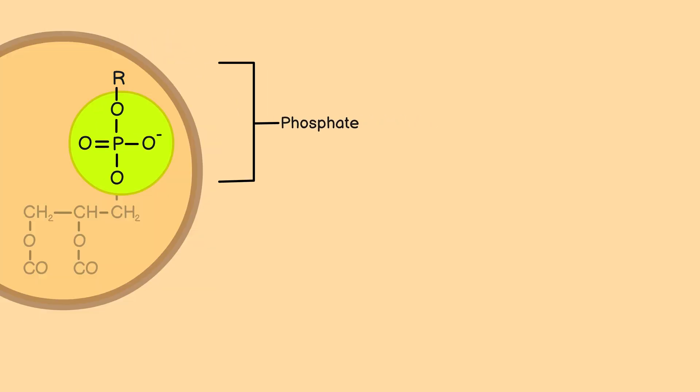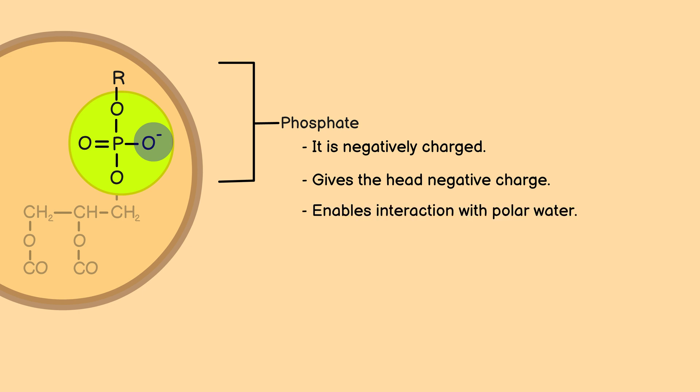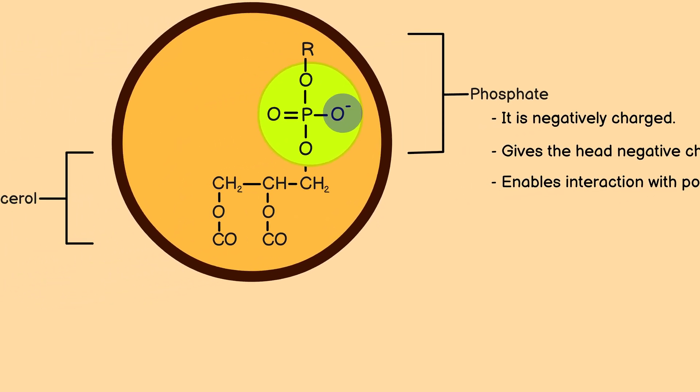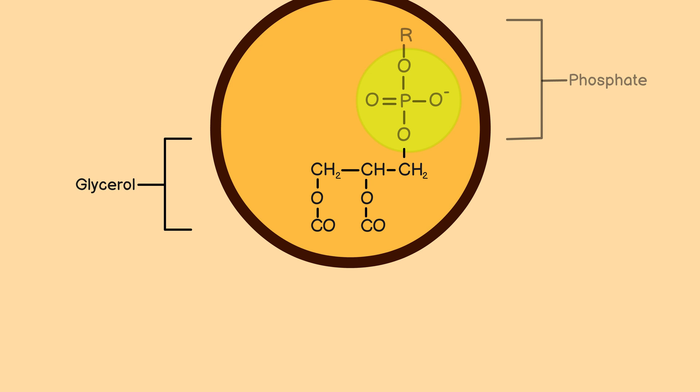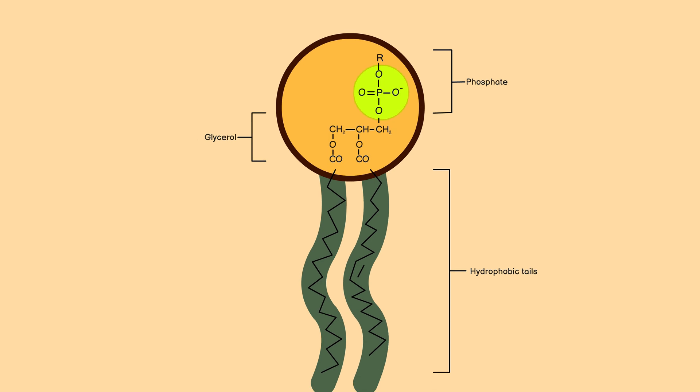The hydrophilic head is made up of a phosphate group and glycerol. The phosphate group is negatively charged, and it gives the hydrophilic head its overall negative charge. This negative charge allows it to interact with polar water molecules via hydrogen bonding and electrostatic interactions, whereas the glycerol acts as a bridge between the phosphate group in the hydrophilic head and the fatty acids in the hydrophobic tails.